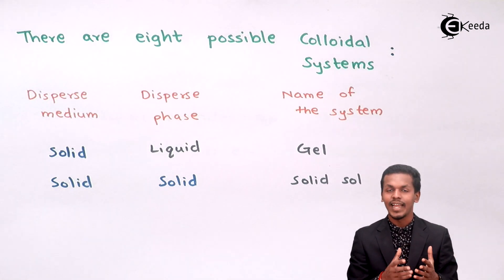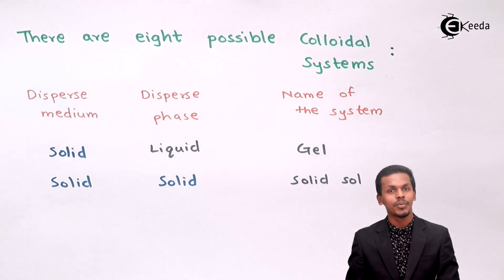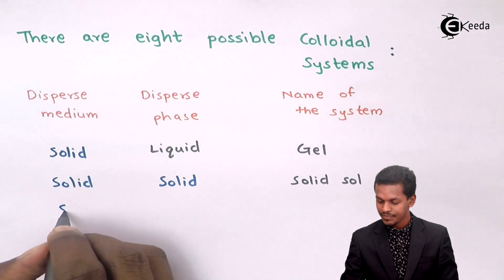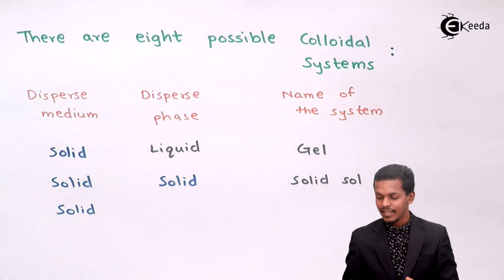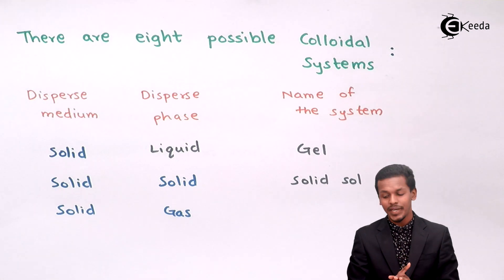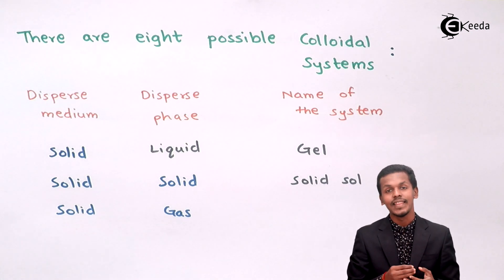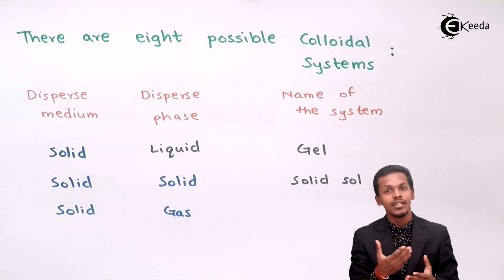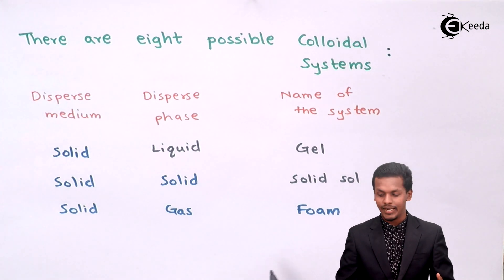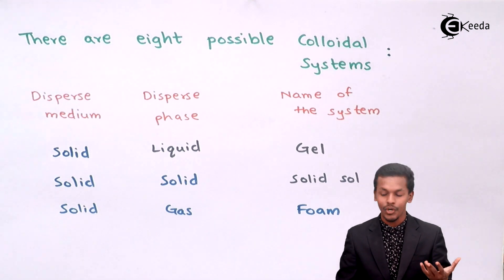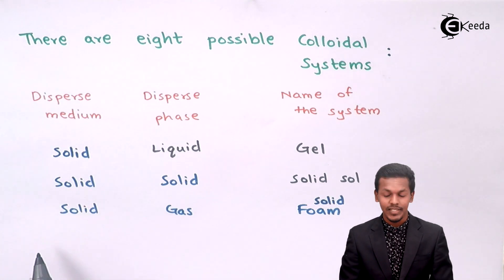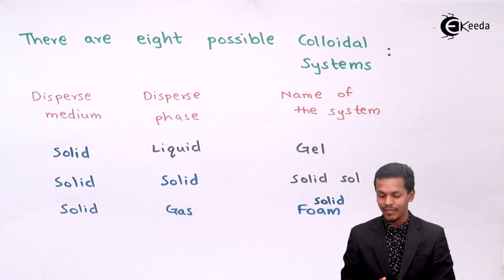When the dispersion medium is solid and the dispersed phase is gas, that system is known as Solid Foam — gas is distributed throughout the solid medium. These are the three colloidal systems where the dispersion medium is of the solid phase: Gel, Solid Sol, and Solid Foam.